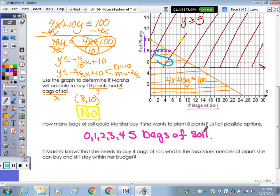And then last, if Marsha knows that she needs to buy 4 bags of soil, what is the maximum number of plants she can buy and still stay within her budget? So in green, 4 bags of soil. What's the maximum? So that's going up. The maximum number would be? 8. 8. So 8 bags. I'm sorry. 8 plants, rather. Maximum number of plants.